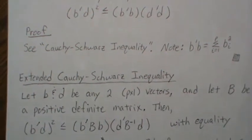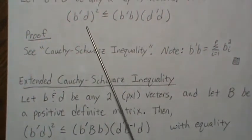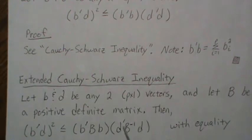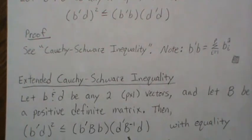Then this relationship holds. And so if we can see the similarity, they're similar, except for there's a B matrix and a B inverse matrix here. And this is it. This is the extended Cauchy-Schwarz inequality.